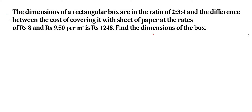The question is: the dimensions of a rectangular box are in the ratio 2:3:4 and the difference between the cost of covering it with sheet of paper at the rates of Rs. 8 and Rs. 9.50 per meter square is Rs. 1,248. Find the dimensions of the box.